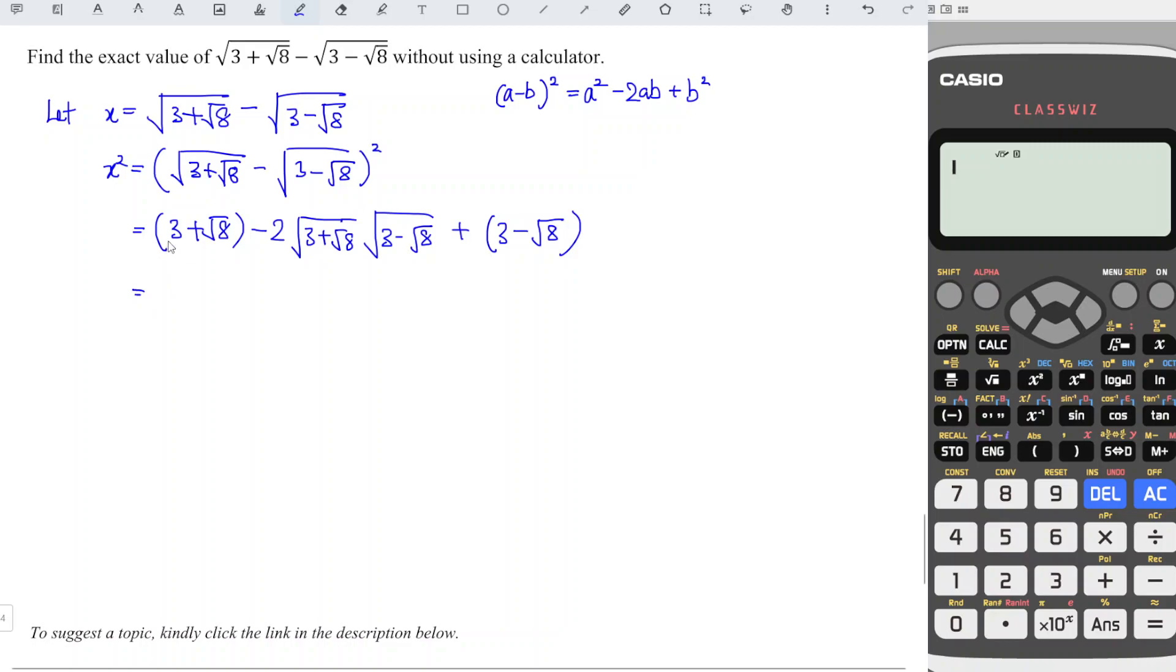So from here we can simplify: 3+3 equals 6, plus √8 minus √8 cancel each other. So we have -2√...